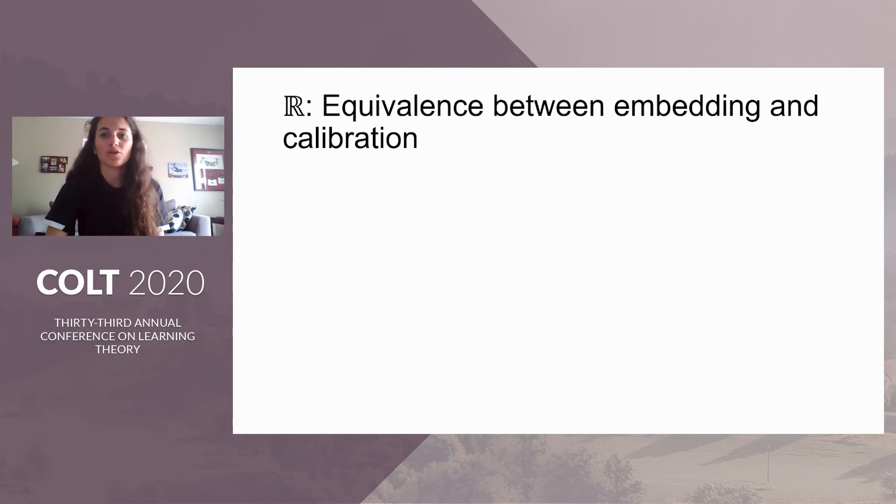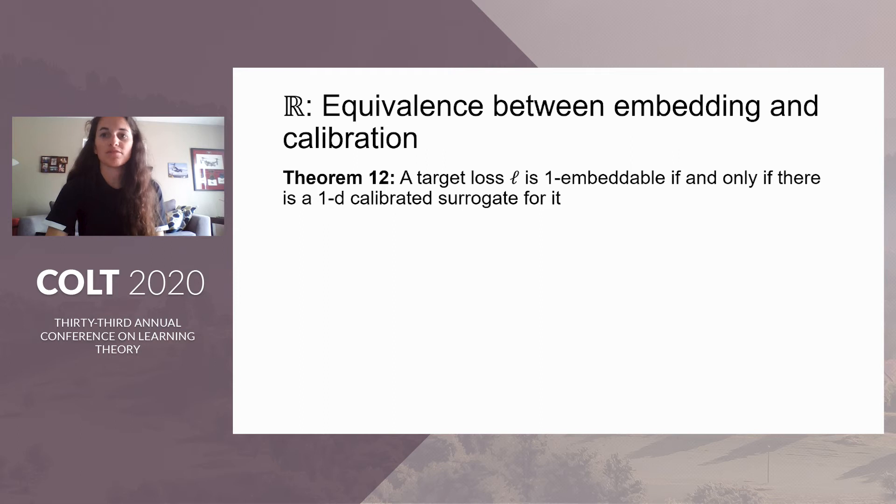Next, we show that a target loss is one embeddable if and only if there is a one-dimensional calibrated surrogate for it. And again, by previous work, this is true if and only if there is a one-dimensional consistent surrogate for it. This bound is tight and shows that, at least in the one-dimensional case, embedding is a sufficient tool to study consistency. Just for your information, if you have a property elicitation background, these statements are also equivalent to statements about the geometry of the property elicited by script L.